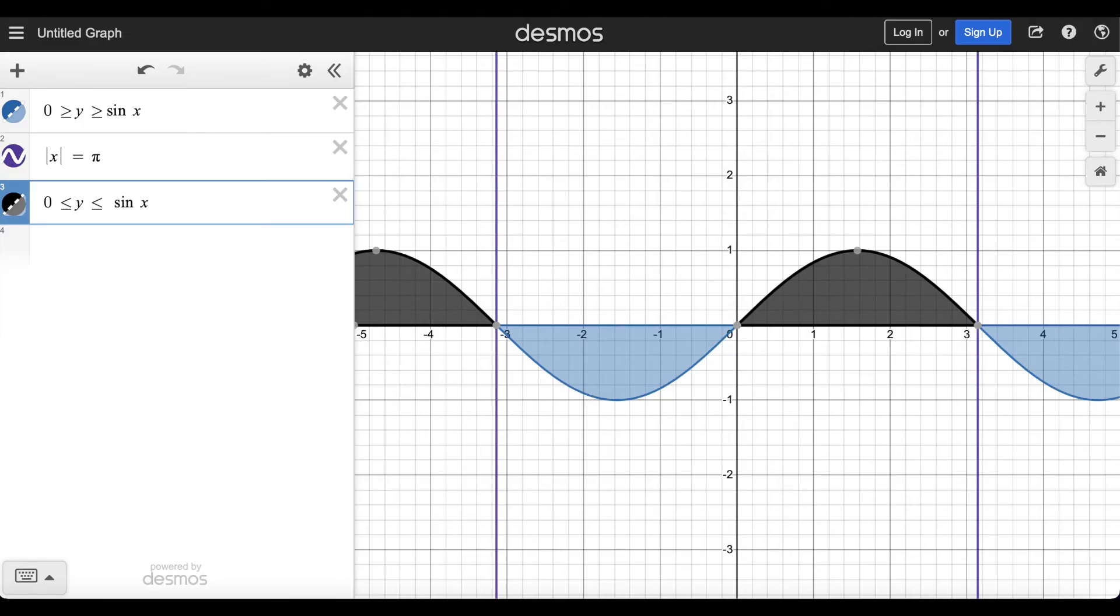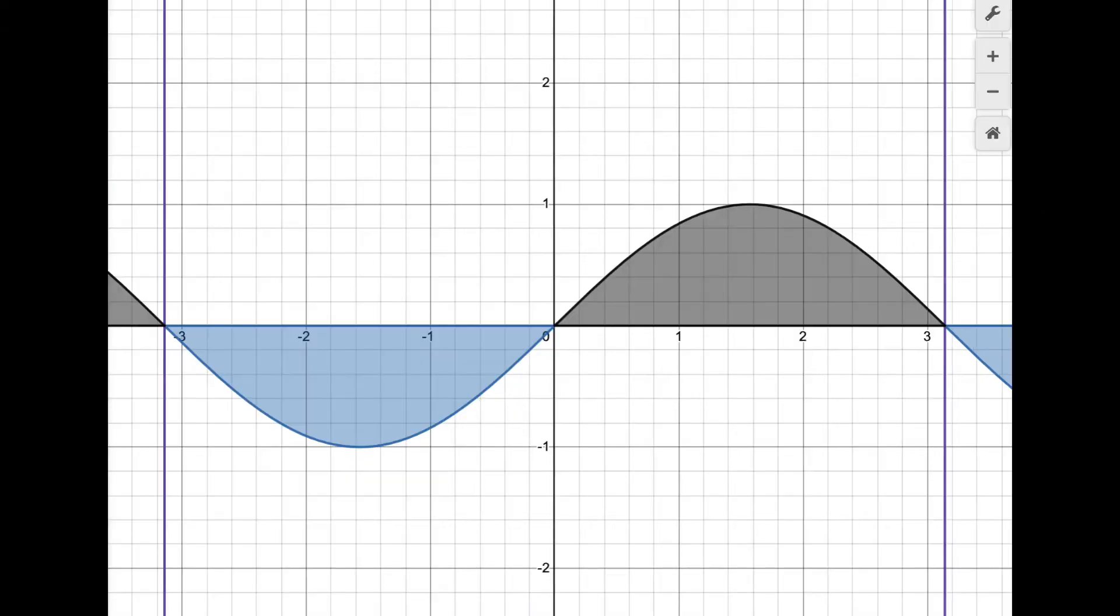Here's a graph of sine x, and I've marked from negative pi to pi with the vertical purple lines. You can see that the area above the axis and the area below the axis are equal, so the integral is zero.